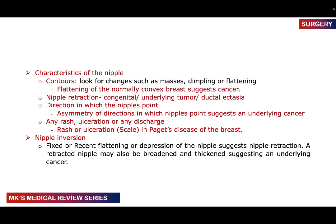Examine the nipples for their contour. Note any masses, dimpling, or flattening — flattening of a normally convex breast is suggestive of cancer. Check if nipples are retracted — this may be congenital, due to an underlying tumor pulling on the nipple, or duct ectasia. Note the direction in which nipples are pointing — asymmetry in direction may indicate underlying cancer. Check for any rash or ulceration, which could be Paget's disease of the breast. Fixed or recently flattened depressed nipples suggest nipple retraction, which may point towards breast cancer.